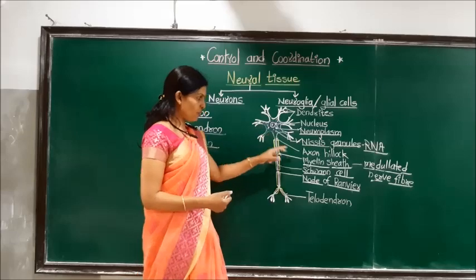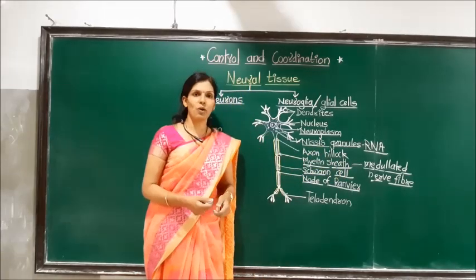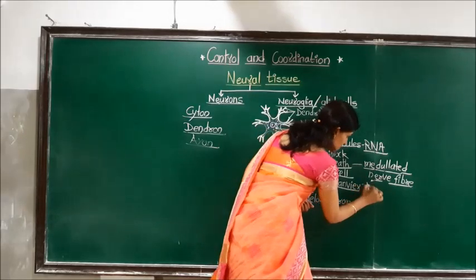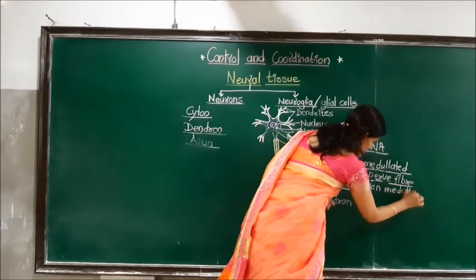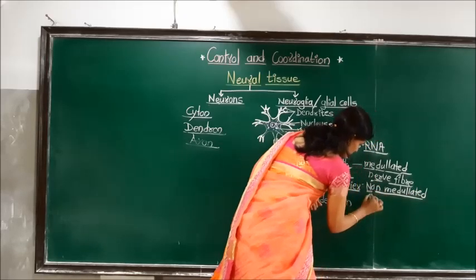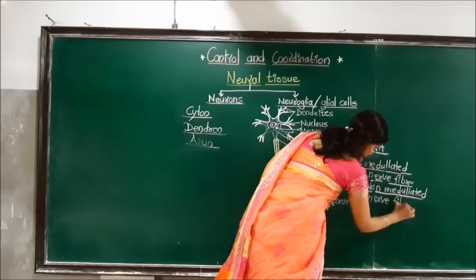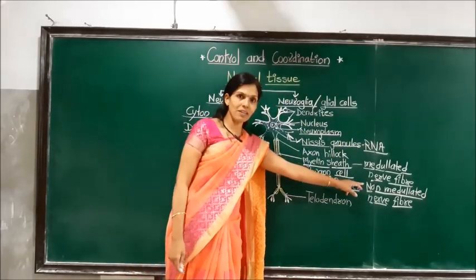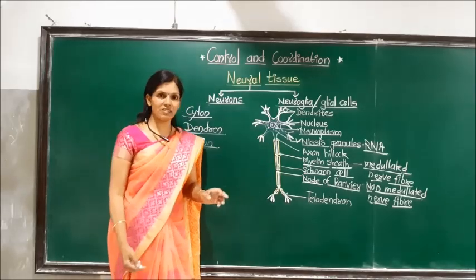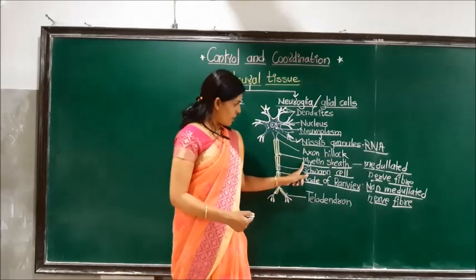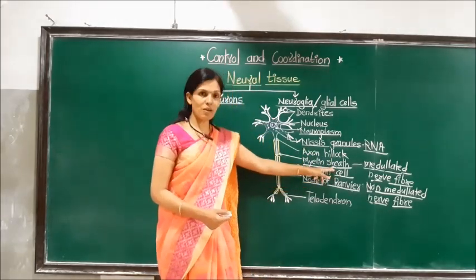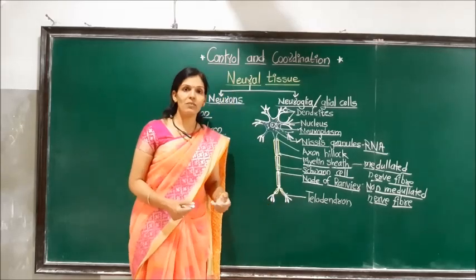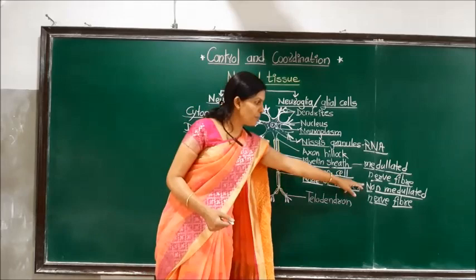If the myelin sheath is absent in the axon, the nerve fiber is called a non-myelinated or non-medullated nerve fiber, in which only the neurilemma is present. Based on the presence or absence of the myelin sheath, nerve fibers are divided into two types. Myelinated nerve fibers carry nerve impulses 50 times faster than non-medullated nerve fibers.